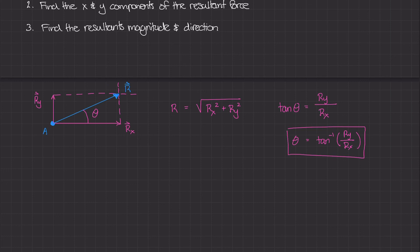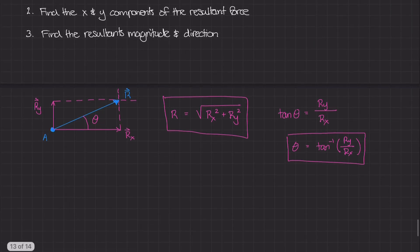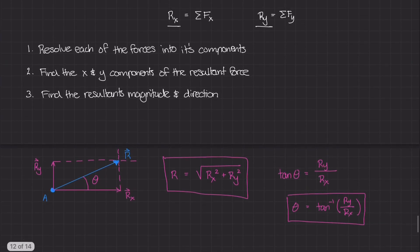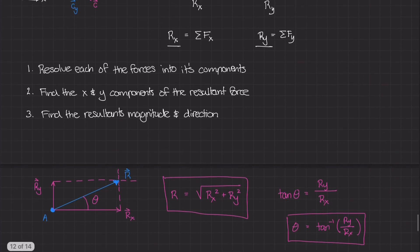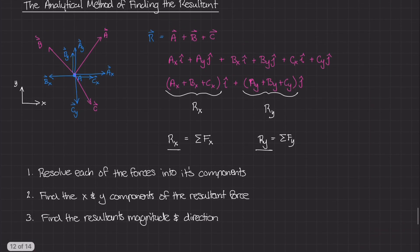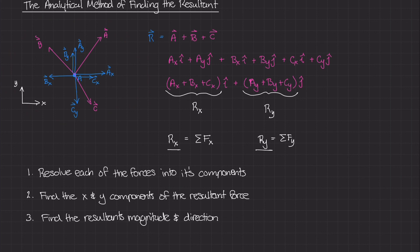Now we have the resultant's magnitude and direction. That's the general strategy for figuring out what the resultant force is when you're given a bunch of different forces acting on a particular object, particle, or system.